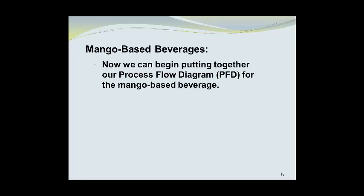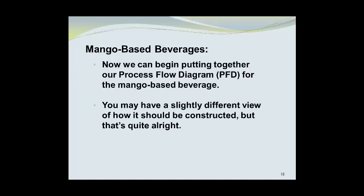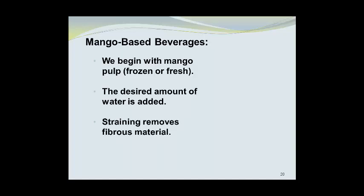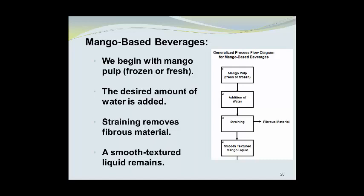Now we can begin putting together our process flow diagram for the mango-based beverage. We will begin with mango pulp that can be fresh or frozen. The desired amount of water is then added and, if desired, the mixture can be strained to remove fibrous material — though the fiber can be left in if its contribution to mouth feel is desired. When strained, a smooth textured liquid remains. The first box in the PFD shows the mango pulp, addition of water, and straining to produce smooth mango liquid.